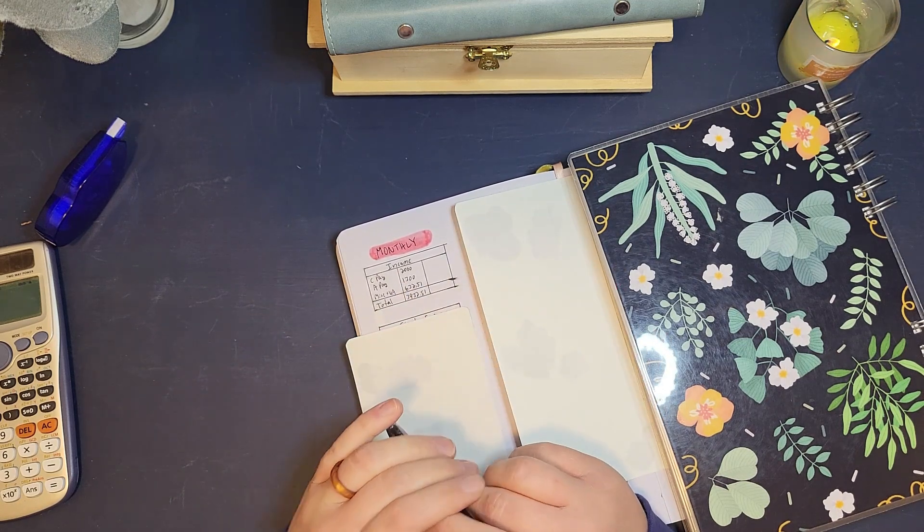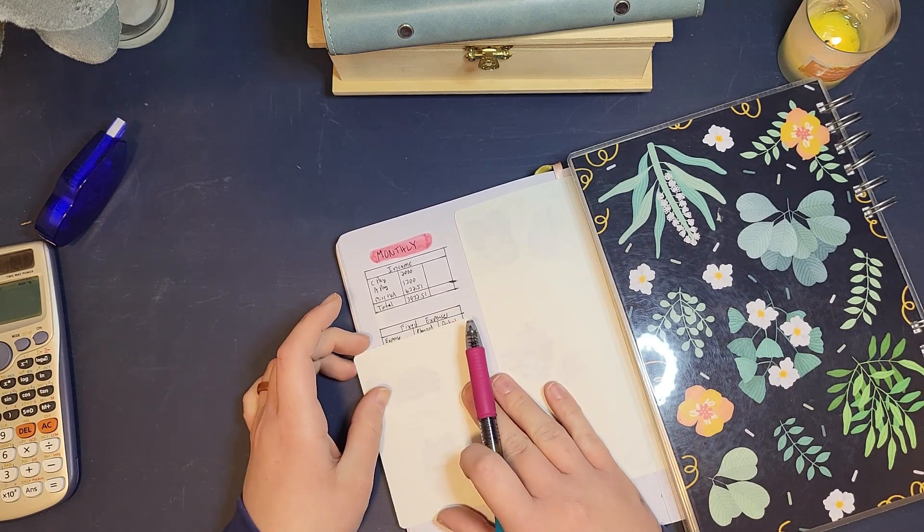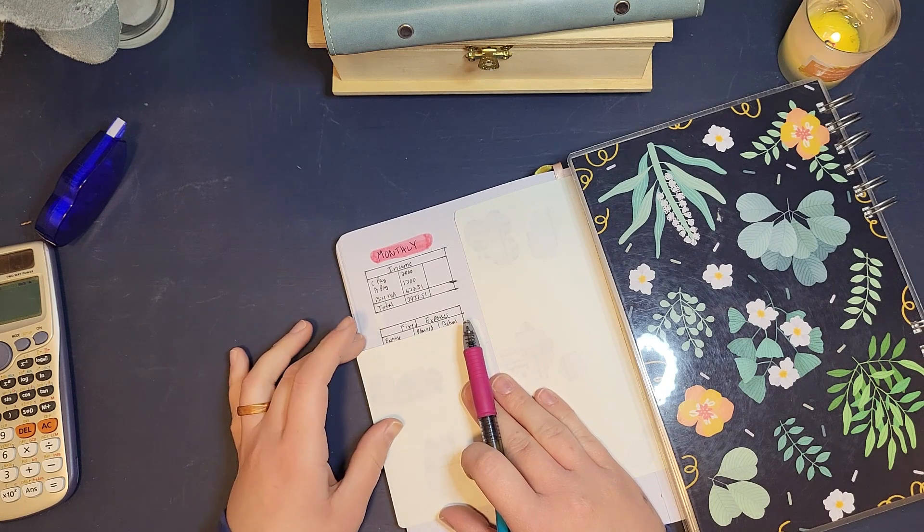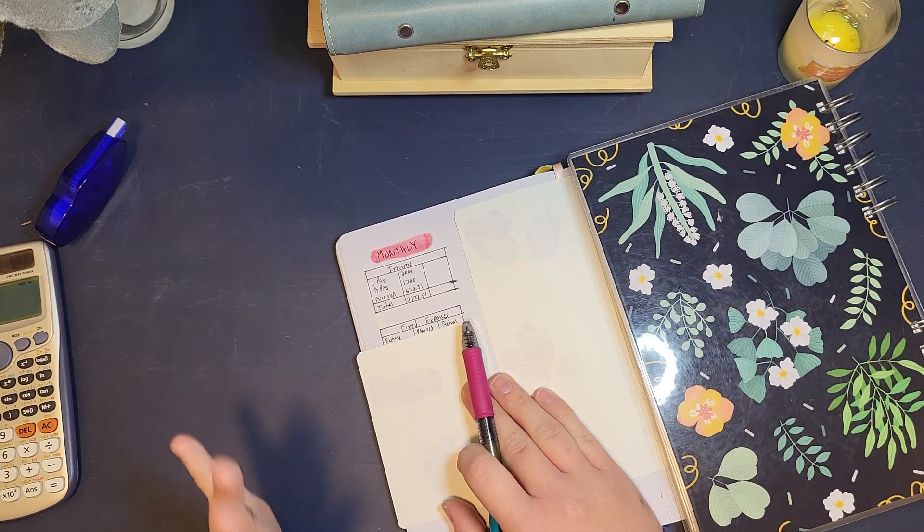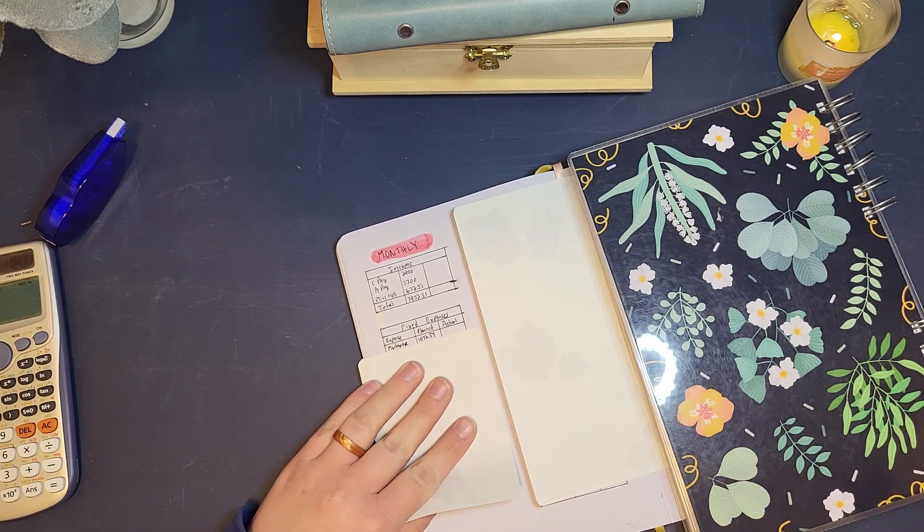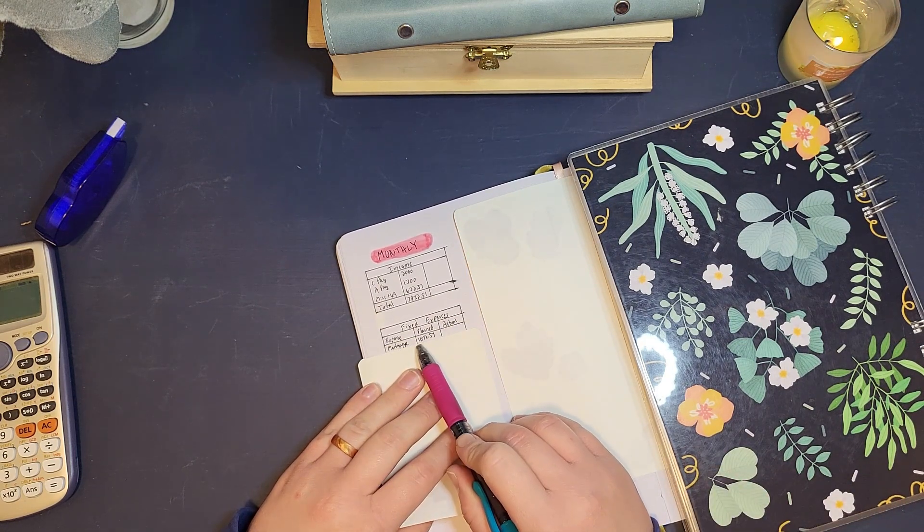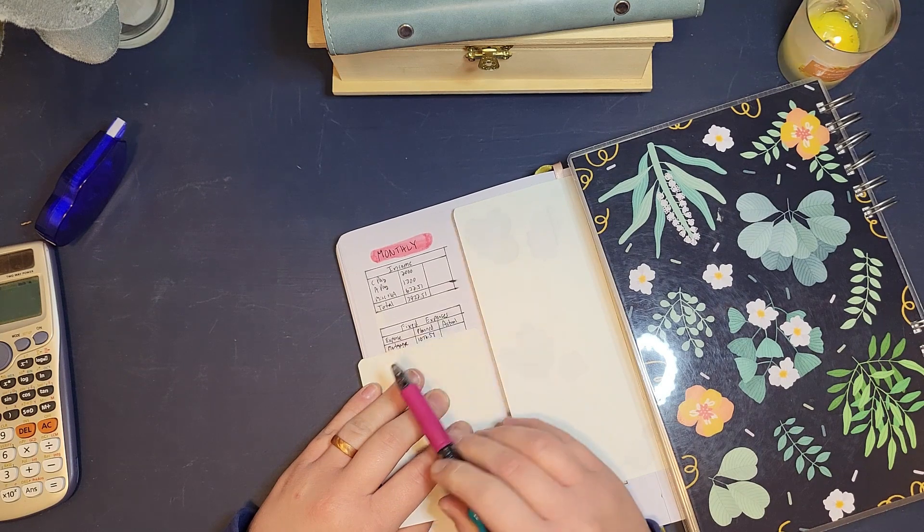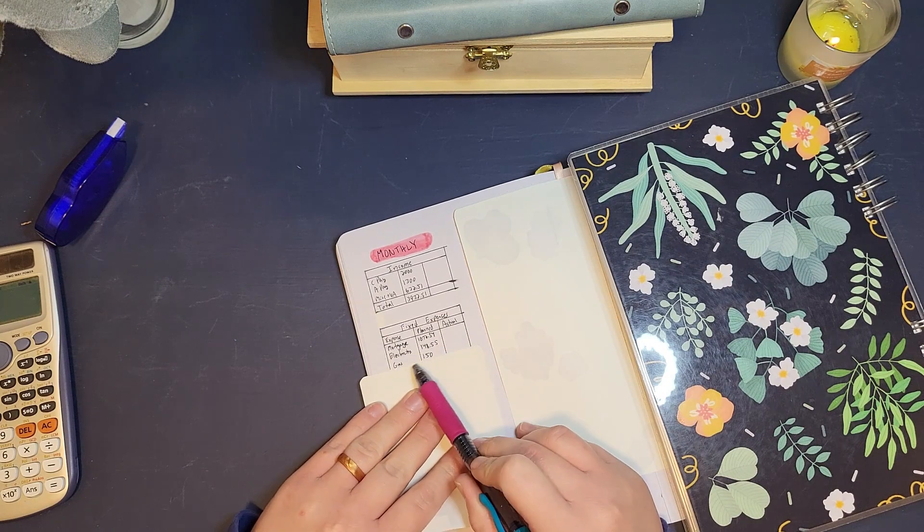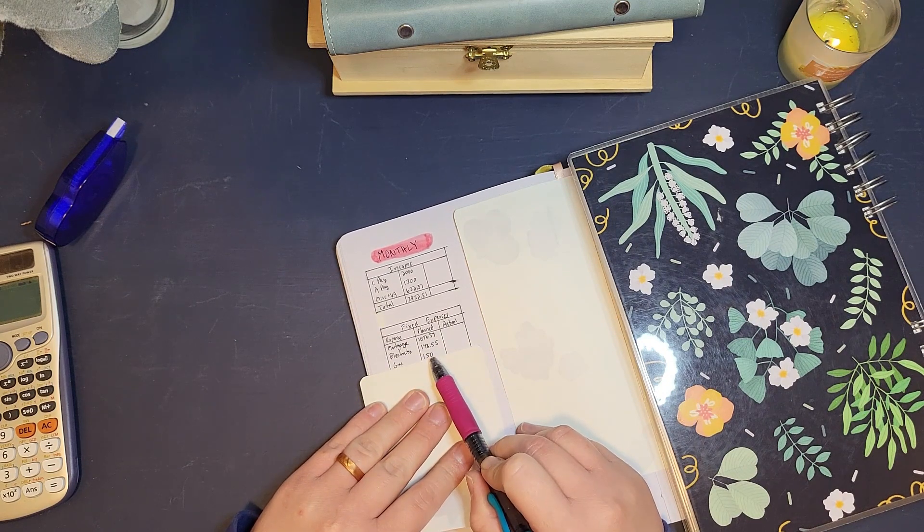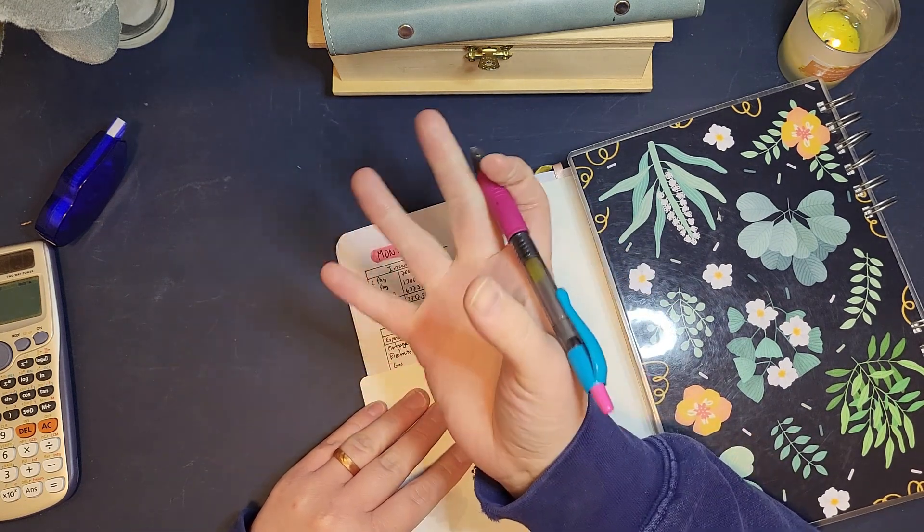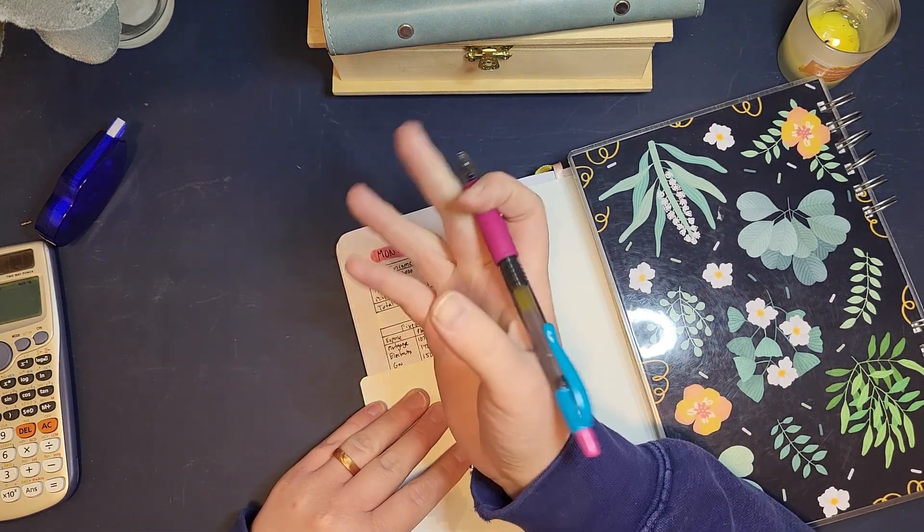We have our fixed expenses here. If you've seen my channel you know what these are. If you're new here we'll go through it. We have the mortgage which will not change, it's going to be $1,072.54. We have our electricity that is the actual amount of the bill this month. We have our gas which is $150, that's a little more than the bill this month, but I like, you know how utilities will do budget billing for you where like your gas bill is going to be higher in the winter so they'll charge you more in the summer to make up for it.